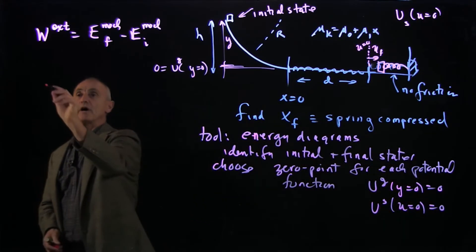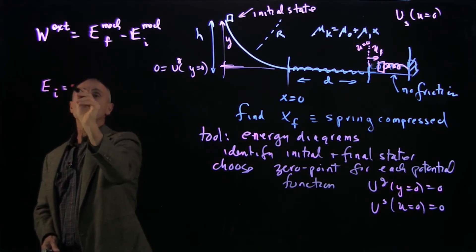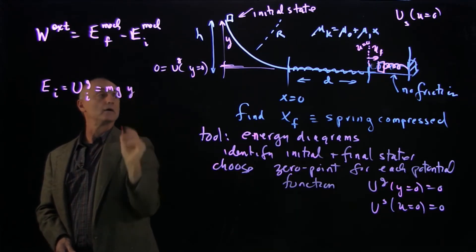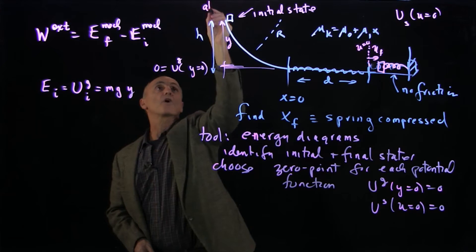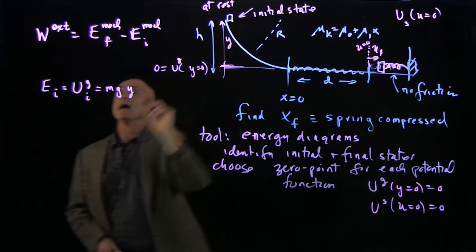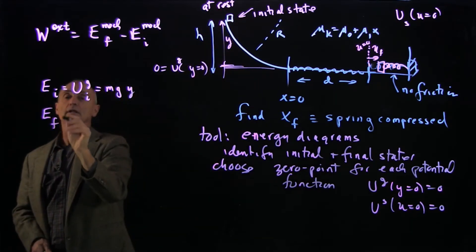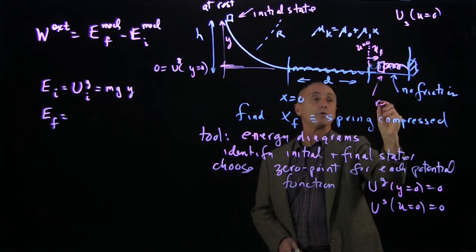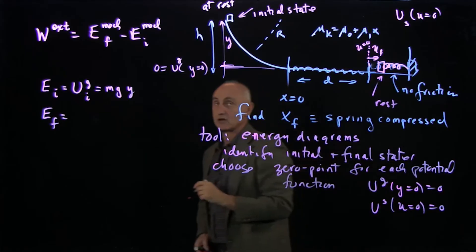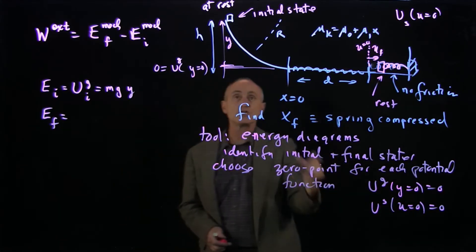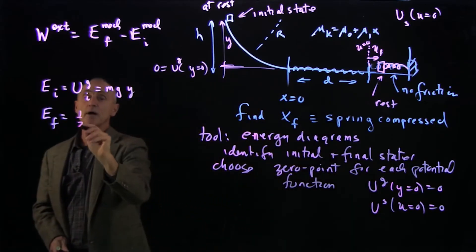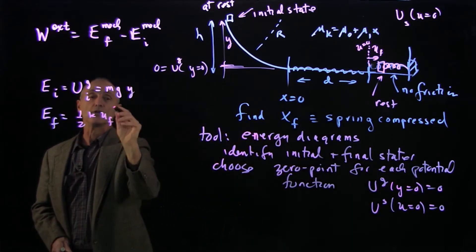So now I can identify my energies. So let's talk about the initial energy is all gravitational potential, that's mgy. It's starting at rest. And e final, well, here this is the distance where it comes to rest also. So there's no final kinetic energy. There's no gravitational potential energy because we're on the surface at y equals 0. But our spring has been compressed by 1 half k little u final squared.